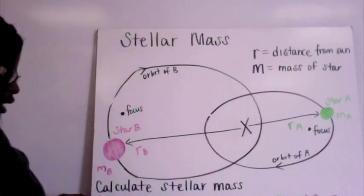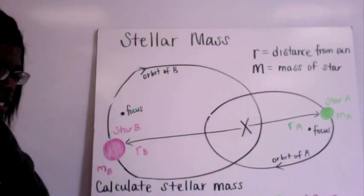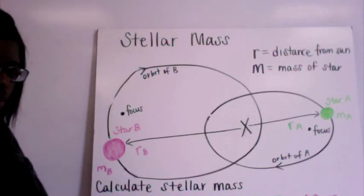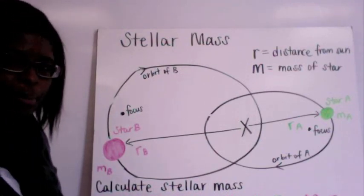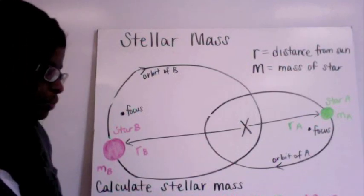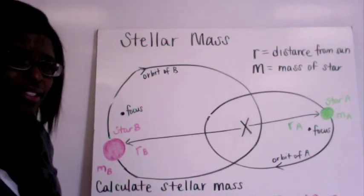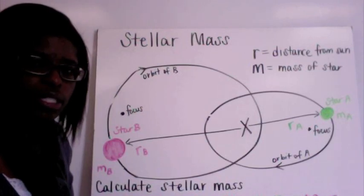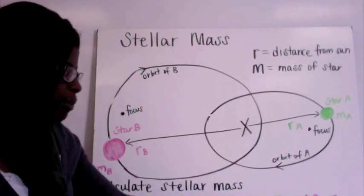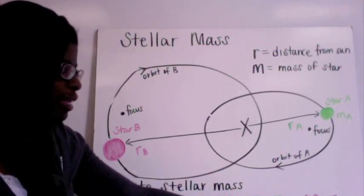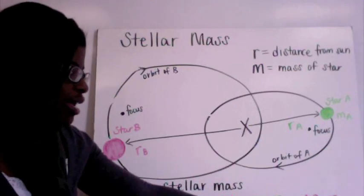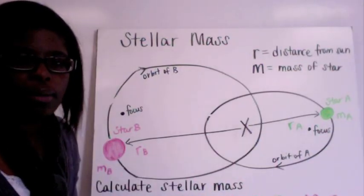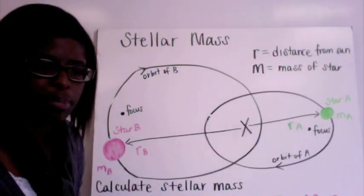So you can only calculate the distance from the Sun and the mass of the star if you have the barycenter. So you're going to take R the distance from star A plus the distance of star B and then same thing for the mass. We're going to simplify those terms and put them together. So the mass of star A multiplied by the distance of star A is going to be equivalent to the mass of B multiplied by the distance of B.